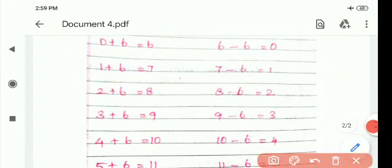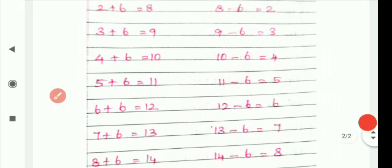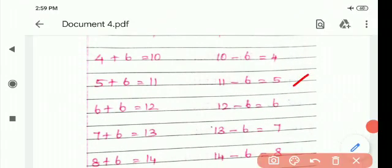I will listen and repeat the sub table. 6 minus 6 is 0. 7 minus 6 is 1. 8 minus 6 is 2. 9 minus 6 is 3. 10 minus 6 is 4. 11 minus 6 is 5. 12 minus 6 is 6.